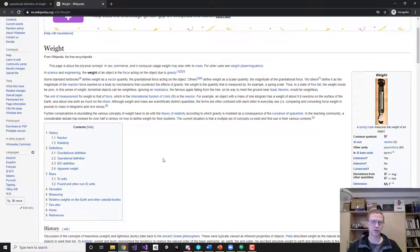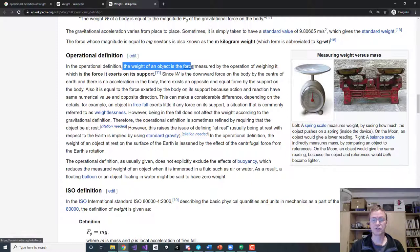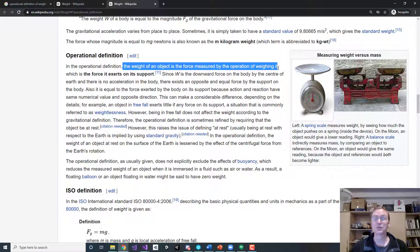The operational definition of weight is right here. And you can see right on the Wikipedia page that there are multiple definitions of the word weight. Sometimes they have very specific meanings in certain contexts. The weight of the object is the force measured by the operation of weighing it. Simple as that. You put it on a scale, the number on the scale is the operational weight.